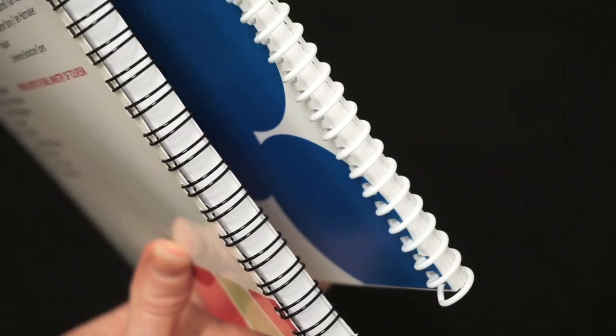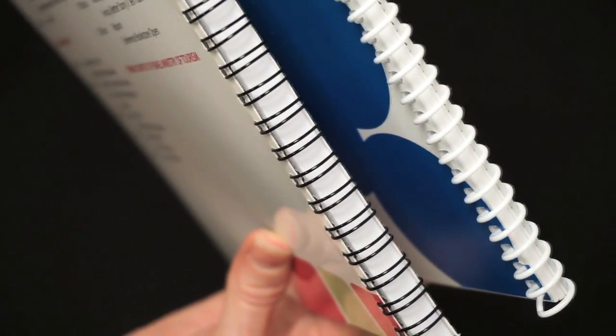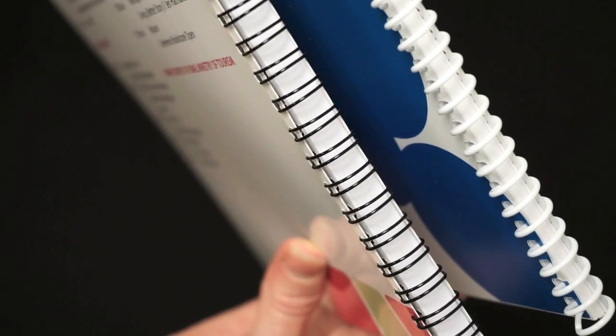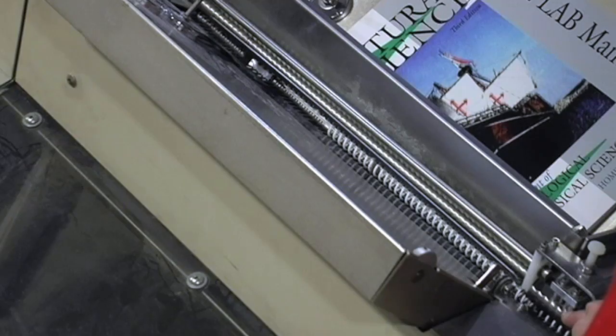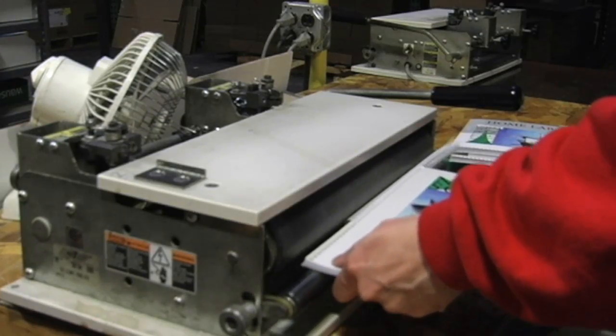Examples are plastic spiral coil bindings, wire-o, and comb binding. We can also produce semi-concealed coil-bound books that allow for a printed spine to be displayed on bookshelves. We are able to mechanically bind up to 3 quarters of an inch automatically and up to 3 inch manually.